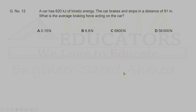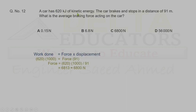Question 12. A car has 620 kJ of kinetic energy and brakes to stop in 91 m. What is the average braking force? Using work done = force × displacement: 620,000 = F × 91. Solving gives F ≈ 6813 N. The closest option is 6800 N. Correct option is C.